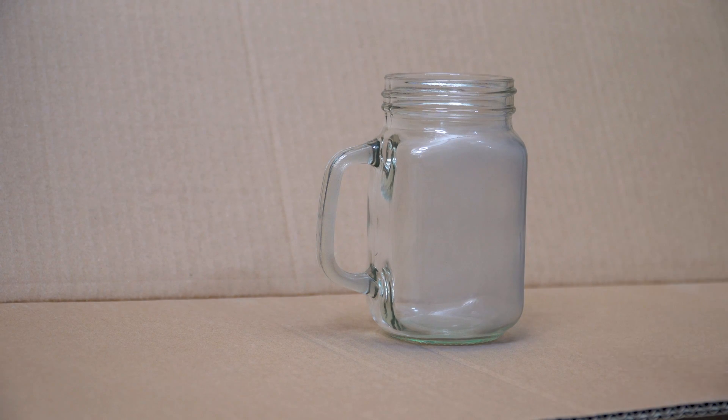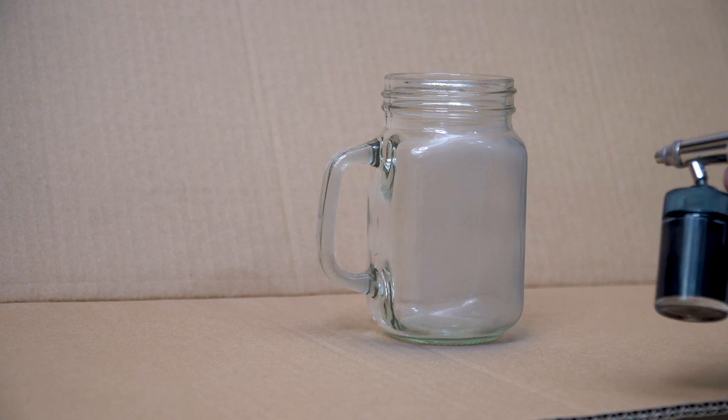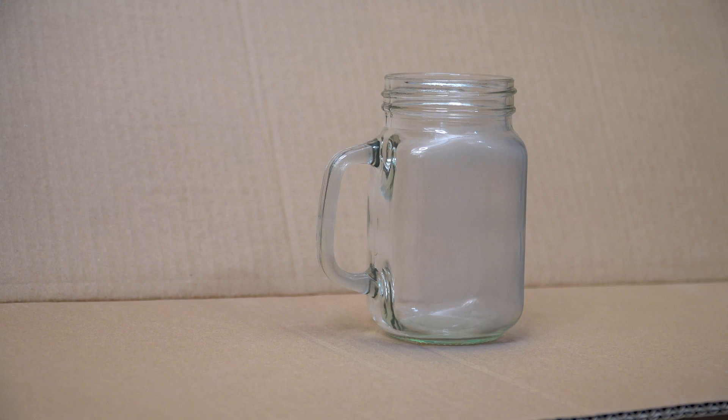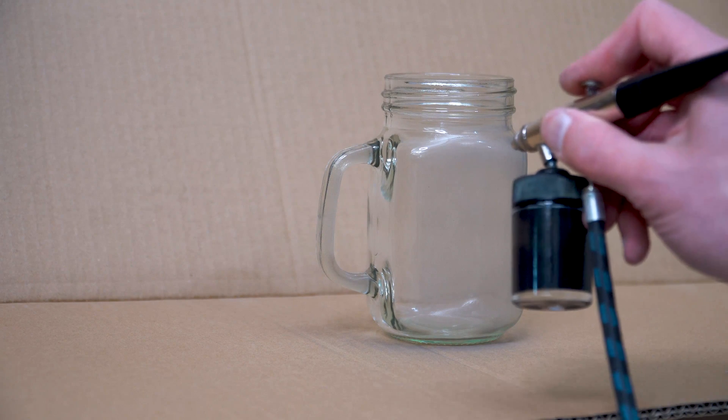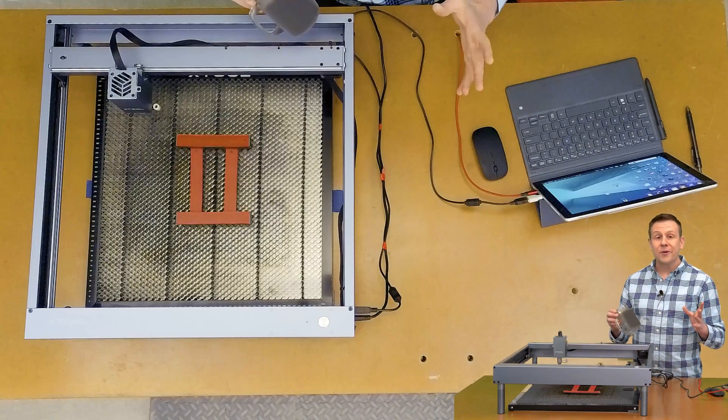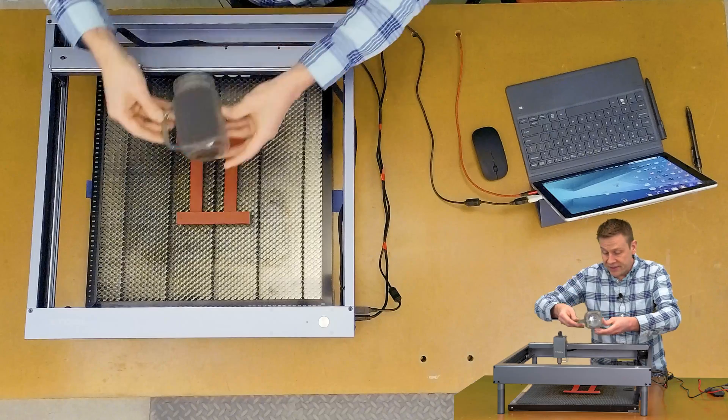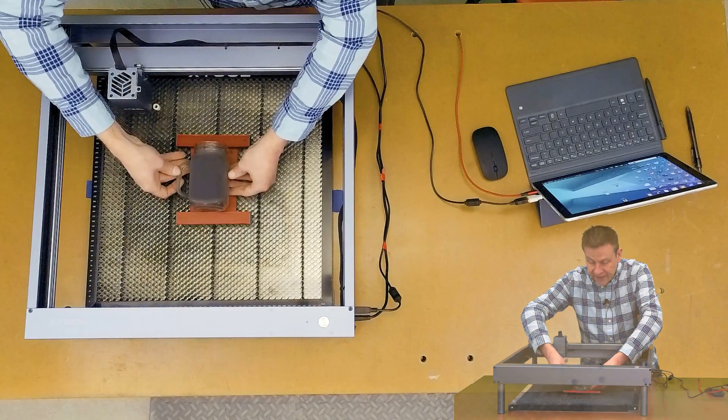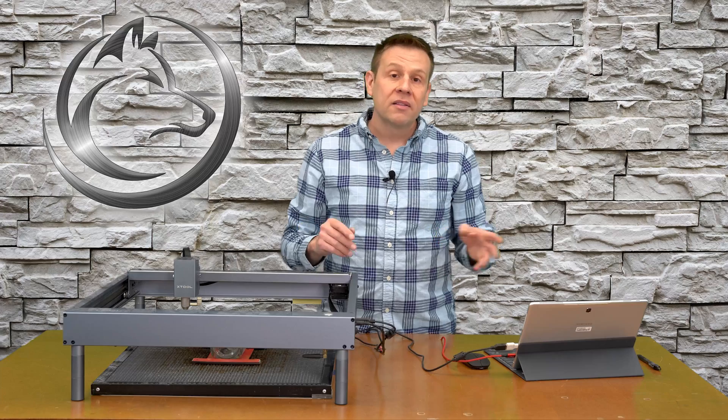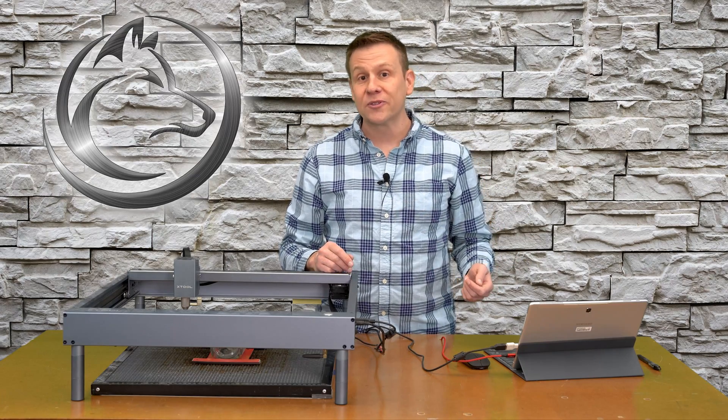The first coat dried very quickly and I could apply some more layers of paint. I'll keep applying the paint until I have a nice even coat of paint across the jar. Three coats of that black tempera paint was all I needed on this jar and I'm ready to place it back in the work area. Next up, let's take a look at the graphics that I have set up in Lightburn software.